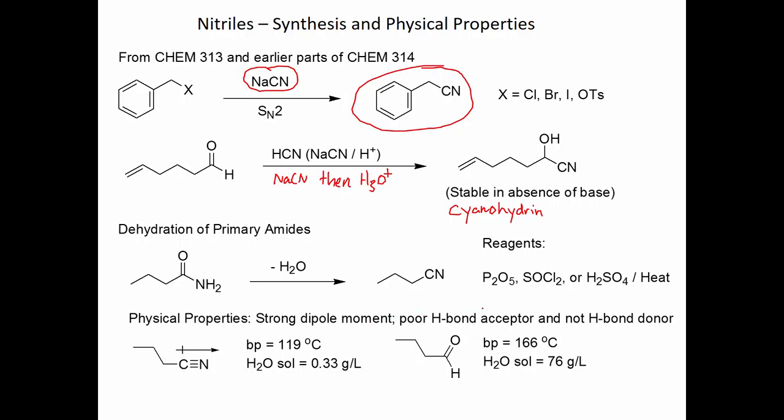If we look at the physical properties of the nitrile, the nitrogen lone pair in a nitrile is not particularly basic. This makes it a poor hydrogen bond acceptor. It's not a hydrogen bond donor because you don't have a hydrogen on nitrogen. We do have a strong dipole, and smaller nitriles are actually quite polar. This poor hydrogen bonding you see reflected in its water solubility. The nitrile isn't nearly as water soluble as the corresponding aldehyde.